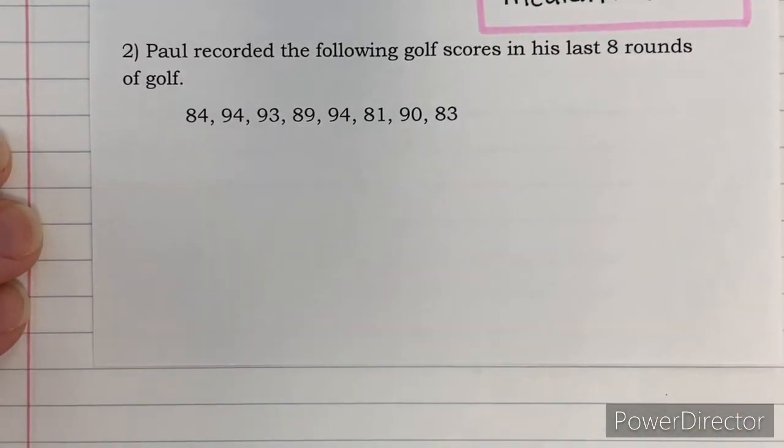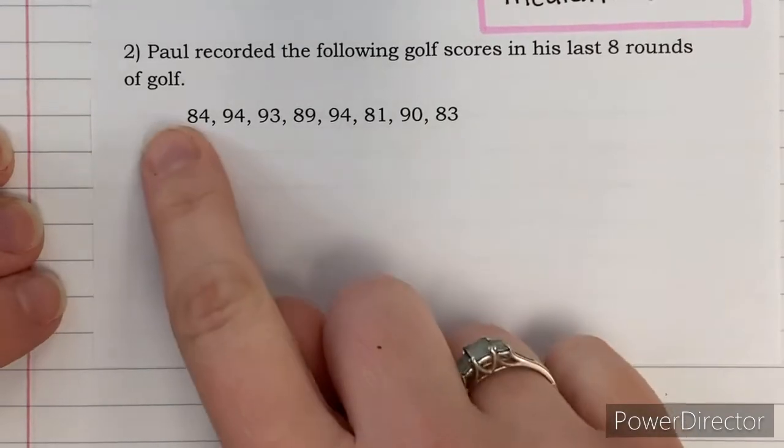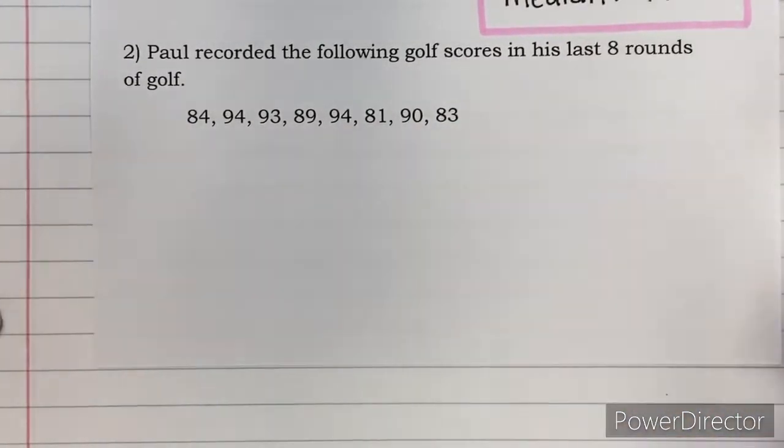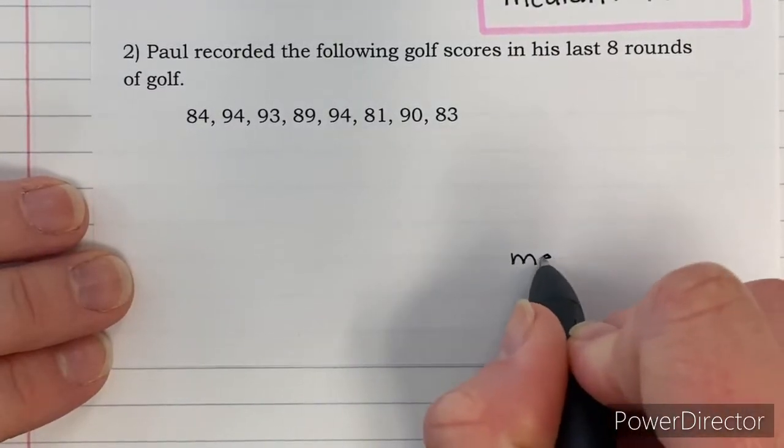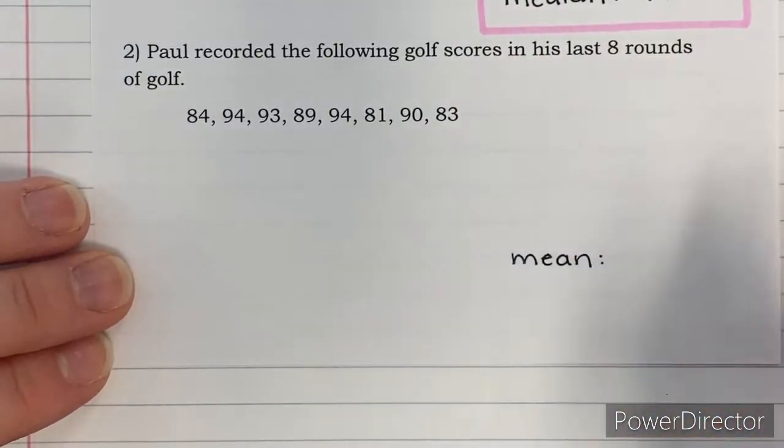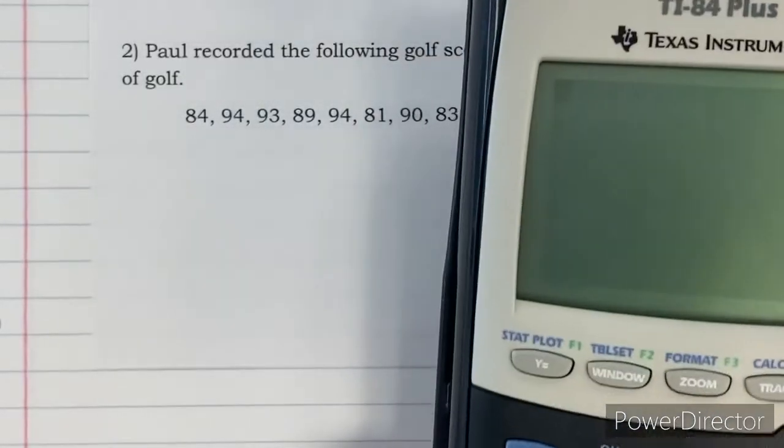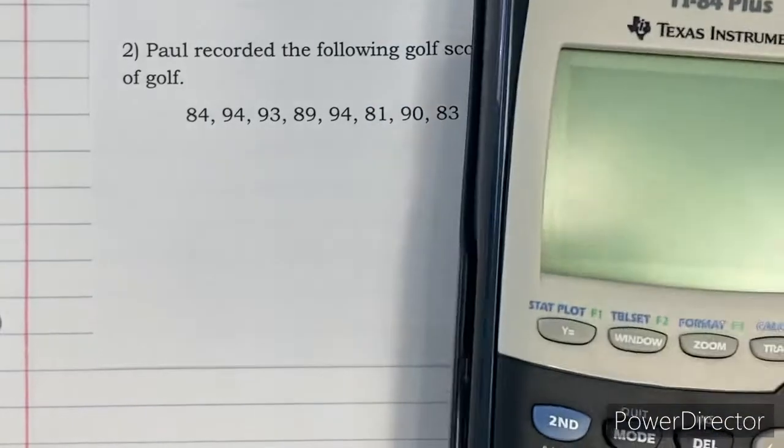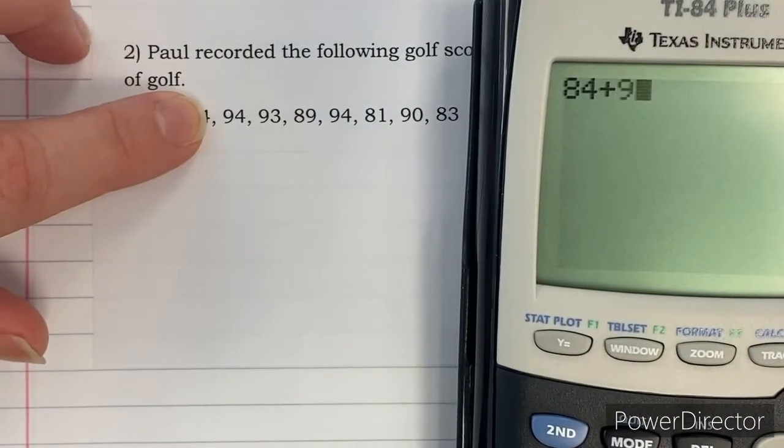Take a look at number two. Number two talks about Paul. He recorded the following golf scores in his last eight rounds of golf. And so then I've got eight numbers. Those are scores that he got in a round of golf. Again, we're looking for mean, which is the average. That's what we'll take care of first. So grab your calculator again. Use your calculator to your advantage on this one. And again, just make sure that you do not skip one.